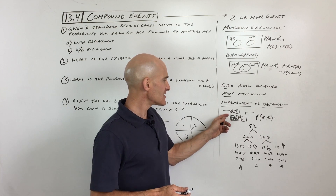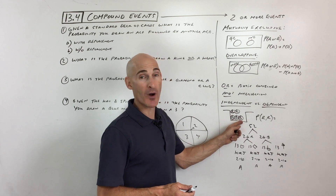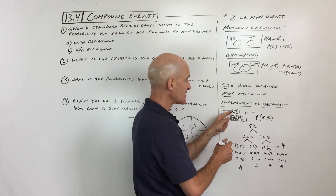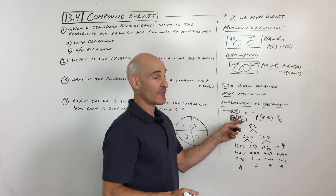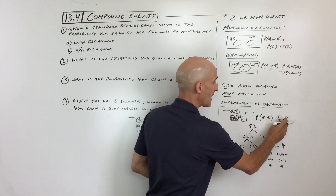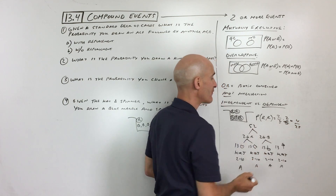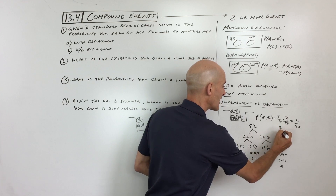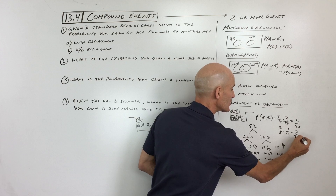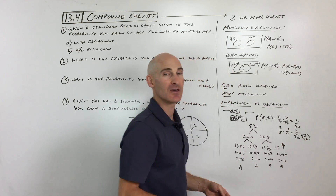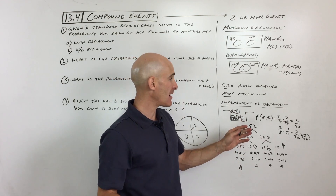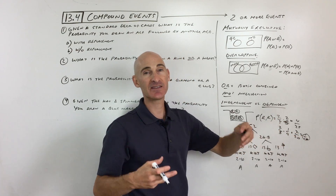Let's look at some examples. Say you have a hat with two red marbles and three blue marbles. What's the probability that you pick a red marble and then another red marble? If you put the marble back in, the probability is still two out of five — those are independent events — and you multiply those together to get four out of 25. But if you throw it away, the first pick is two out of five, and then there's only one red marble left out of four total, so the probability is two out of 20, which reduces to one-tenth. That's dependent — because the probabilities changed. In either case, you multiply the probabilities together.